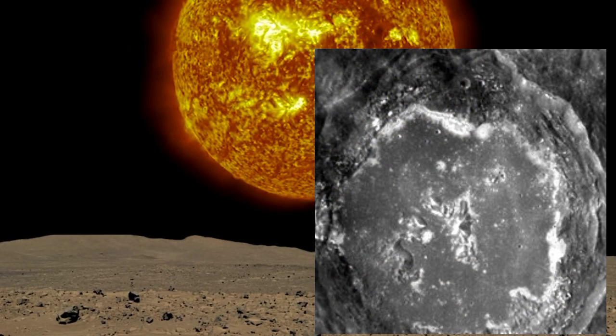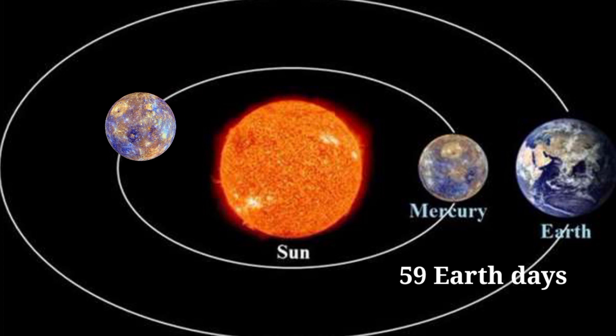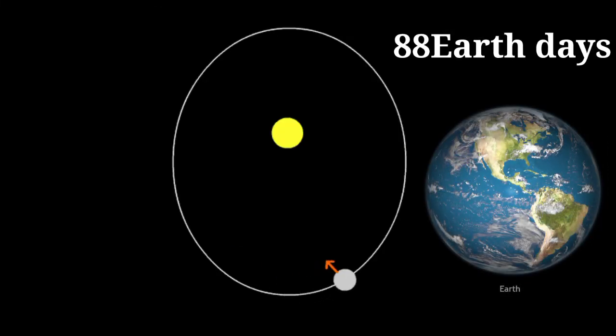Mercury has a crater named after Dr. Seuss. A day on Mercury takes 59 Earth days. Mercury's year is just 88 Earth days.